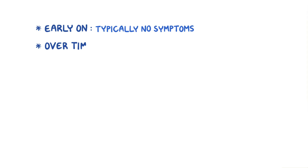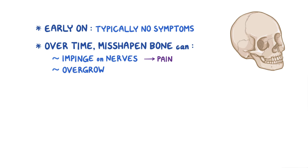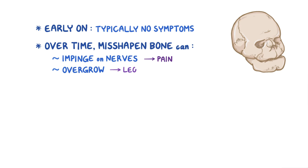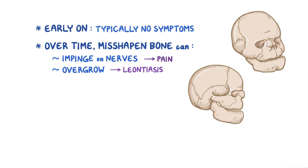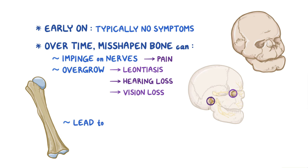Early on, Paget's disease of bone doesn't typically cause symptoms, but over time the misshapen bones can impinge on nerves and cause pain. If the skull is involved, the overgrowth of bones can make a person have a lion-like face, which is called leontiasis. The bony overgrowth can also narrow the auditory foramen and impinge on the auditory nerve, leading to hearing loss. If there's bony overgrowth that impinges on the optic nerve as it passes through the optic canal, that can lead to vision loss. Sometimes, the accelerated bony growth can lead to genetic mutations that cause a bone cancer called osteosarcoma — when that happens, it's referred to as Paget's sarcoma.